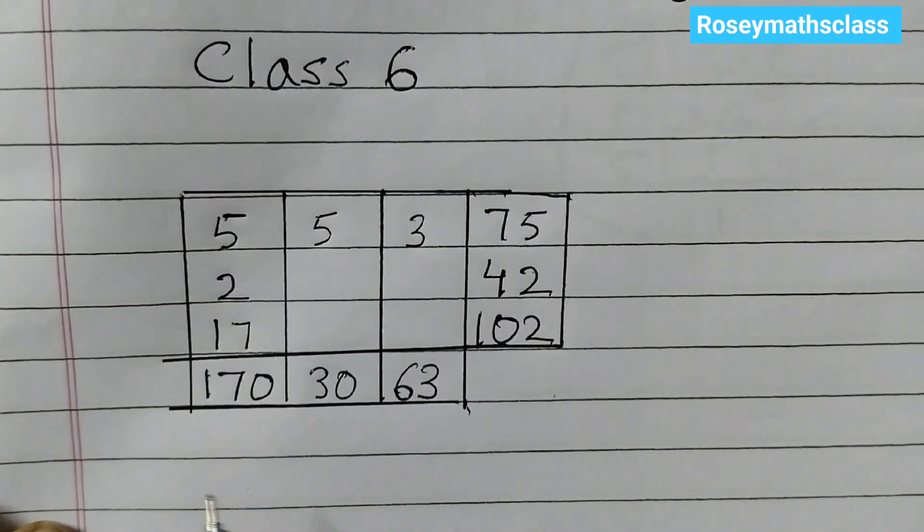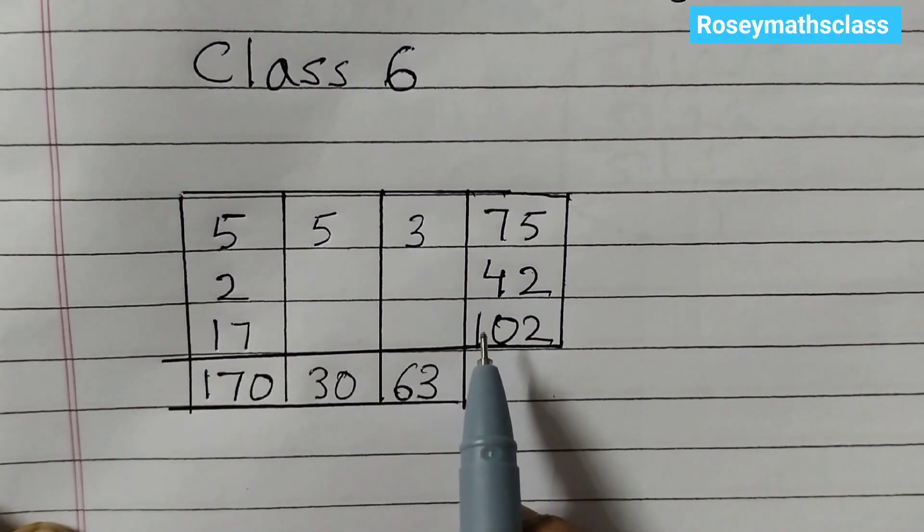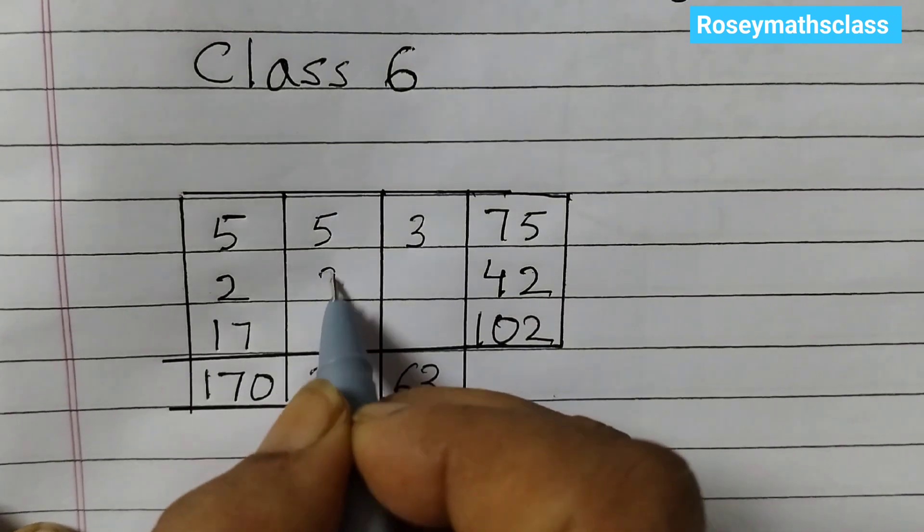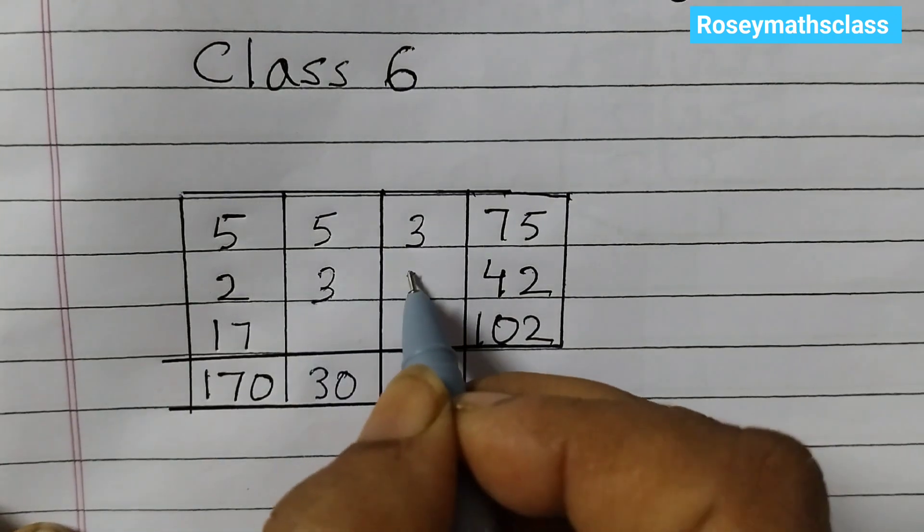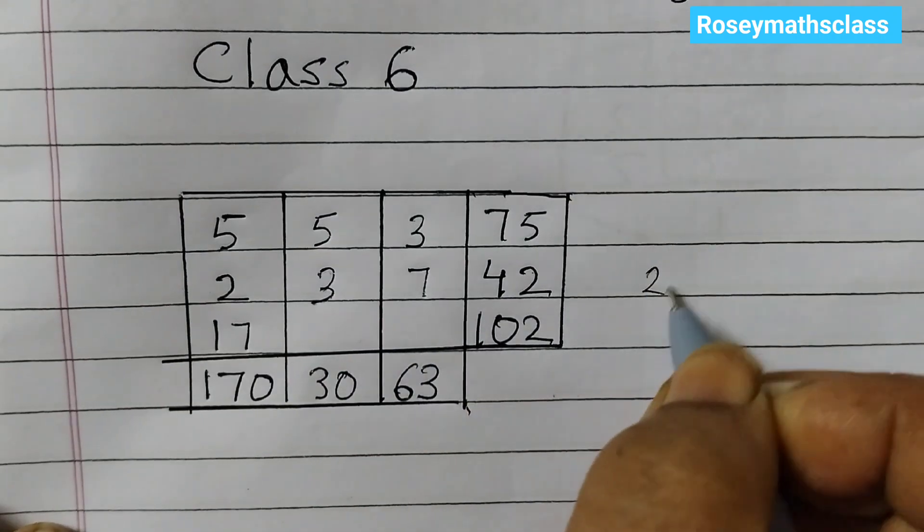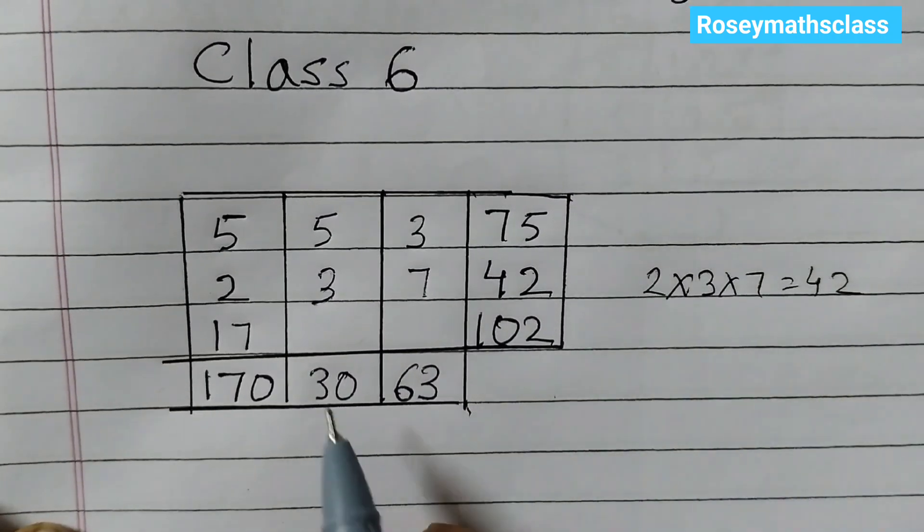Now for the second row it's 42, so 2 times 3 is 6, 6 times 7 is 42. 2 times 3 times 7 you can write like this, 2 times 3 times 7 is 42.